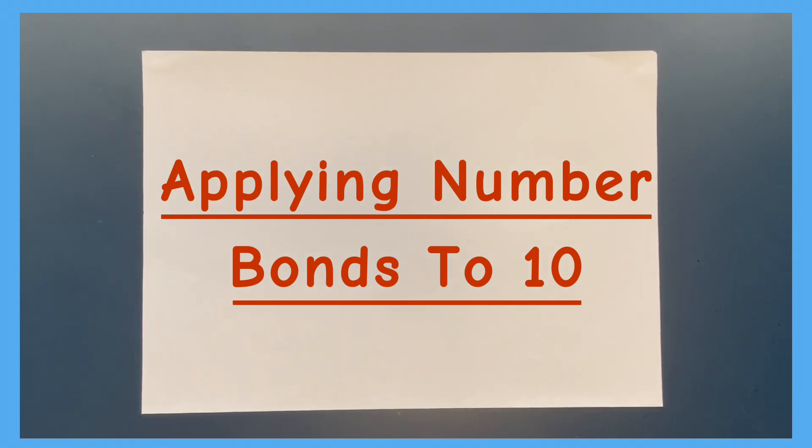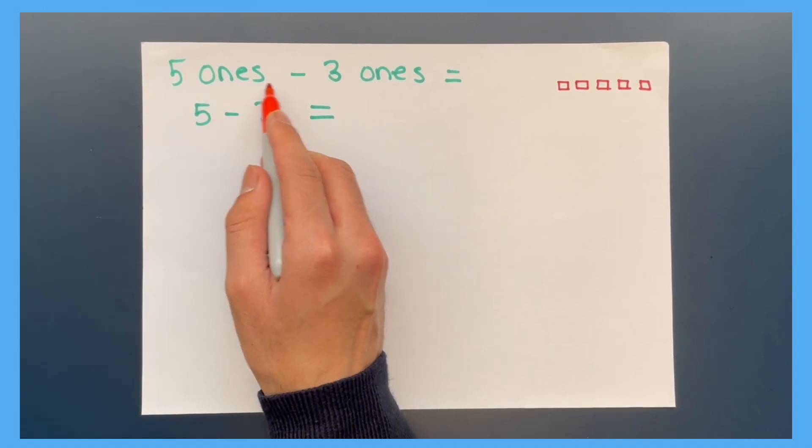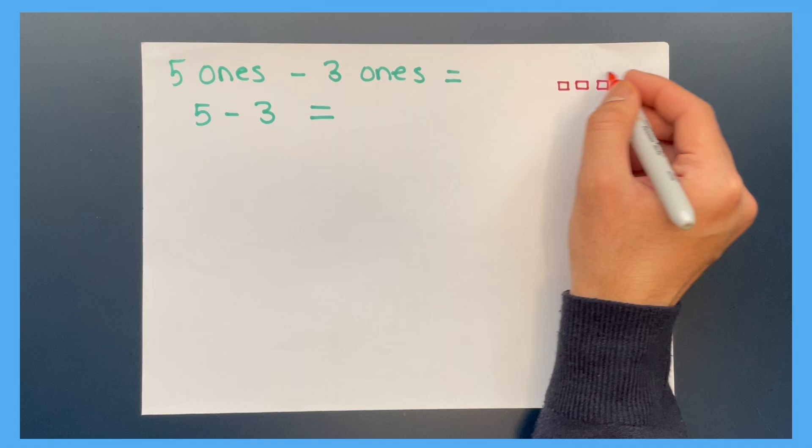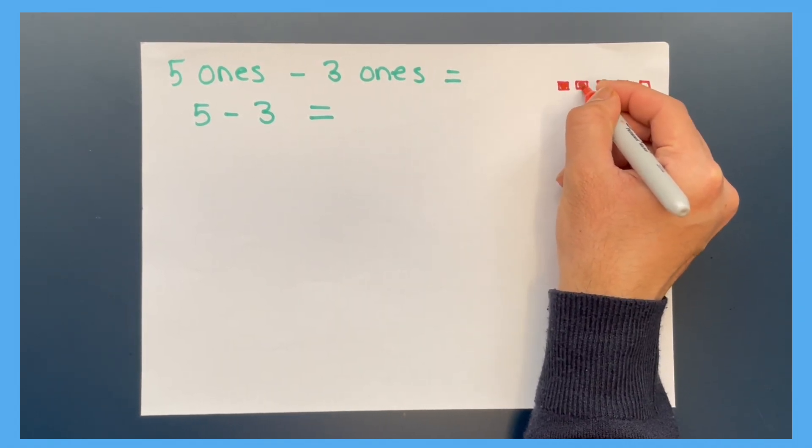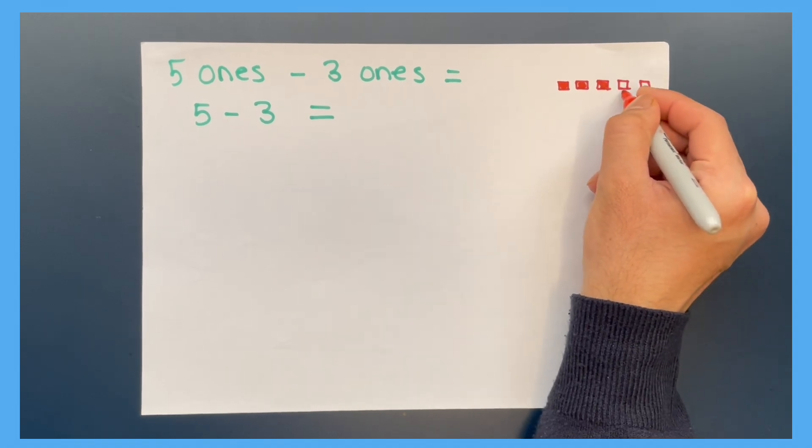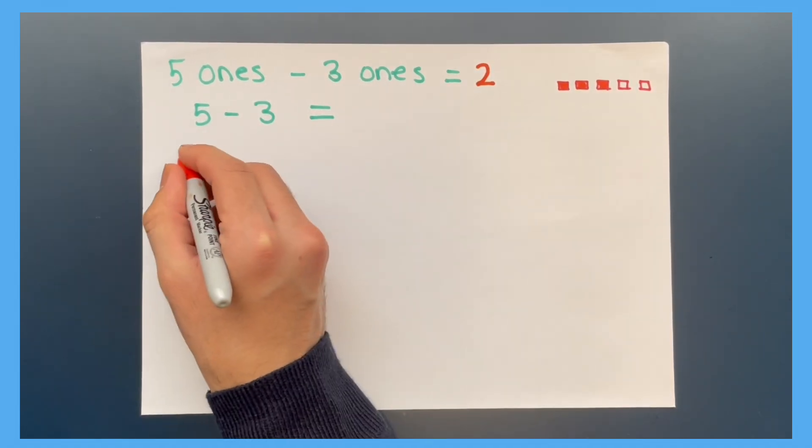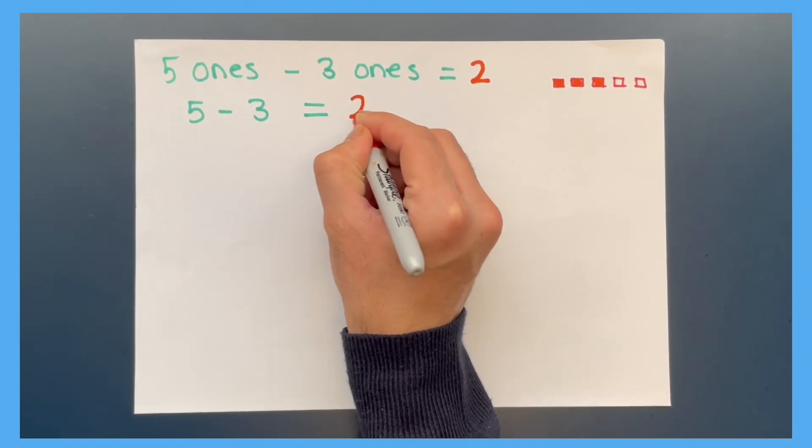Applying number bonds to ten. Let's find out what five ones take away three ones equals. So here we have five take away one, two, three. Two ones are remaining. This is the same as five take away three equals two.